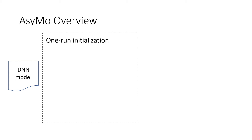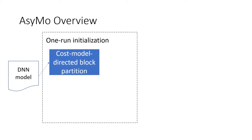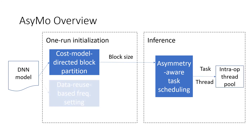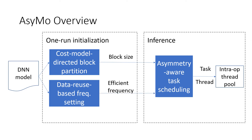The system is composed of three techniques: a cost-model-directed block partitioning part that determines the proper block size, a symmetry-aware scheduling part that schedules for balanced execution, and a frequency setting part that selects the least energy frequency.